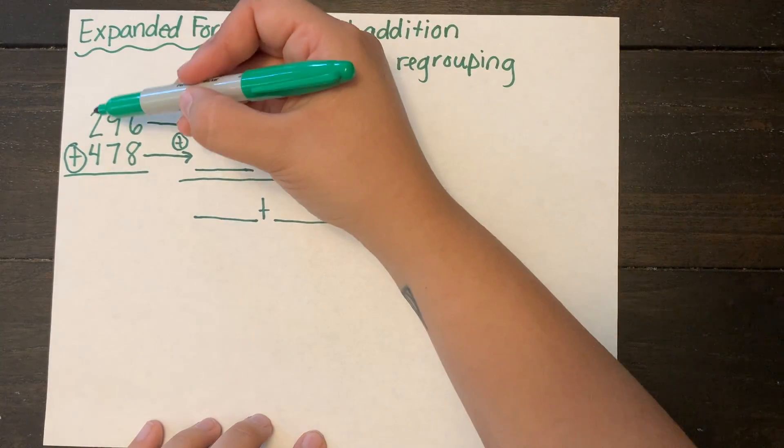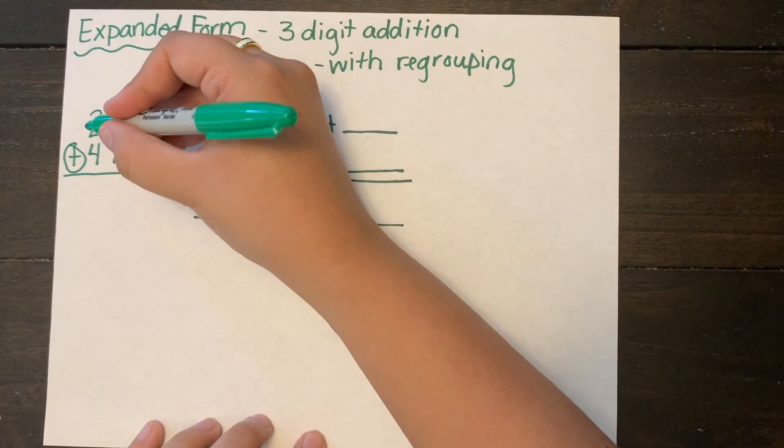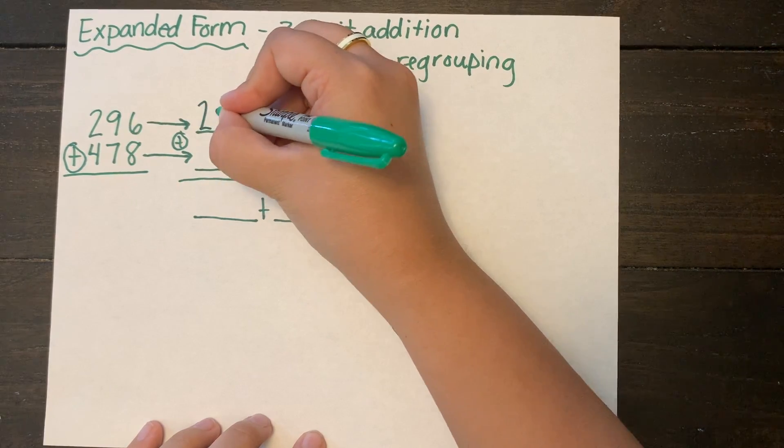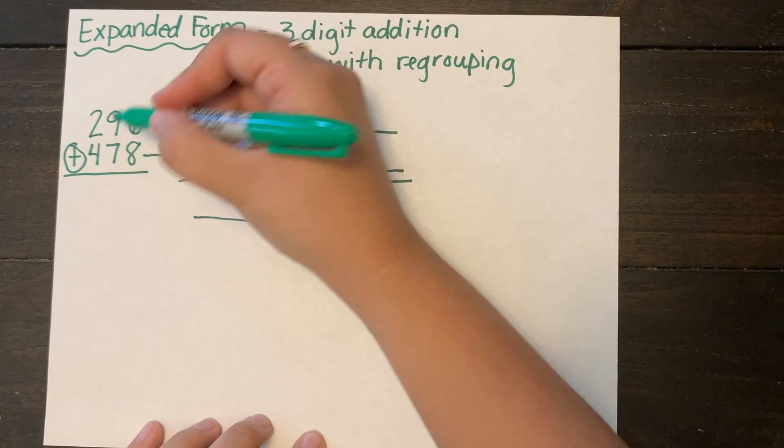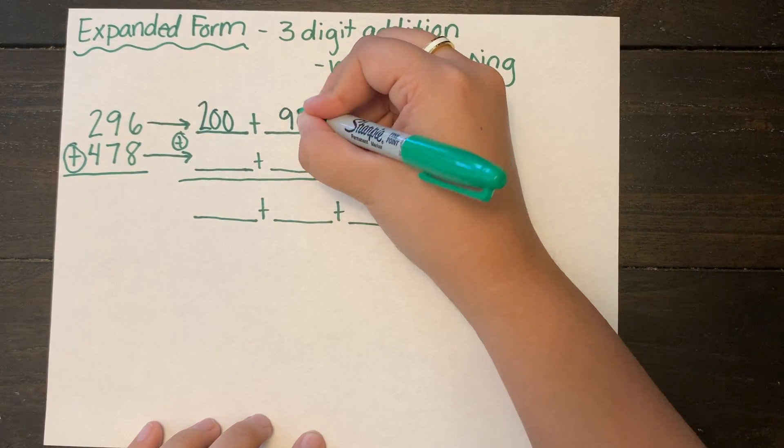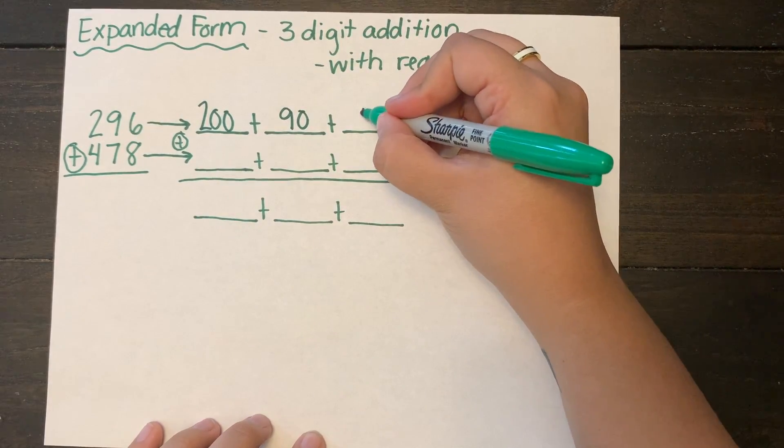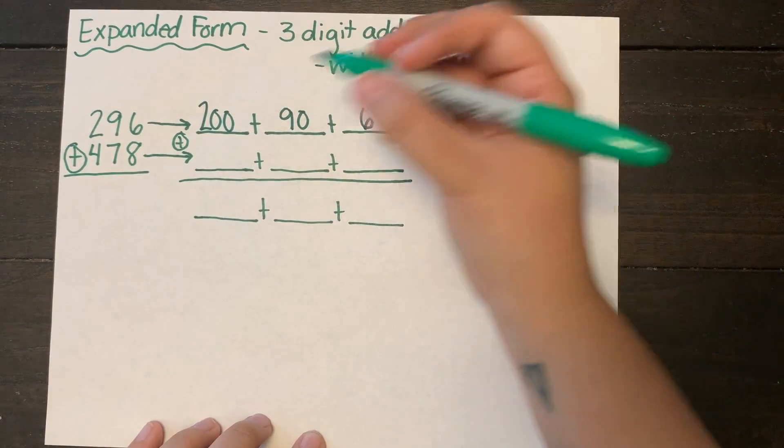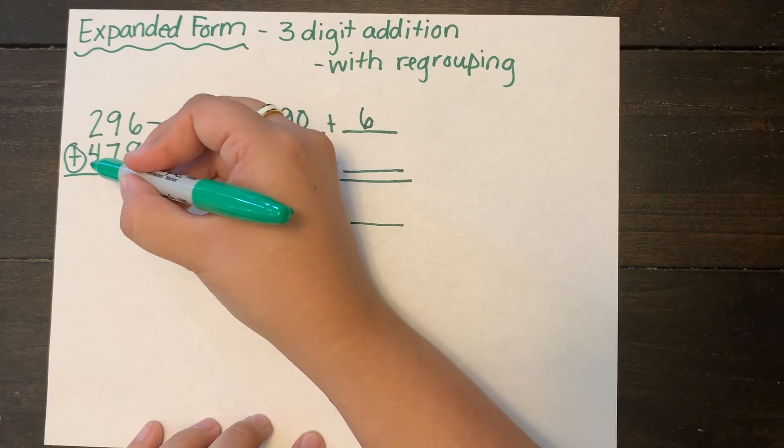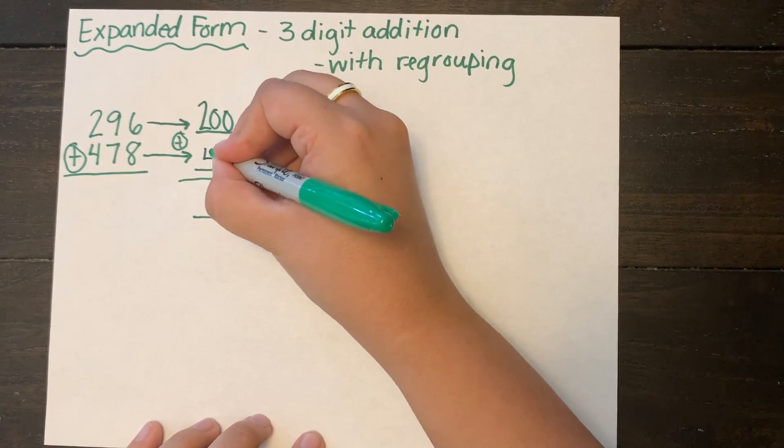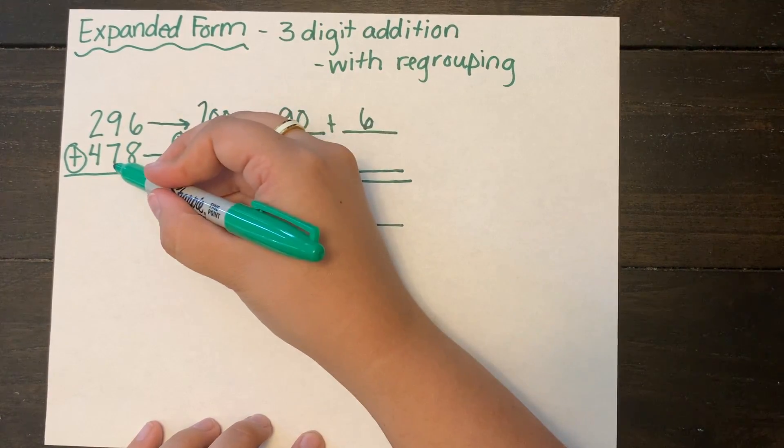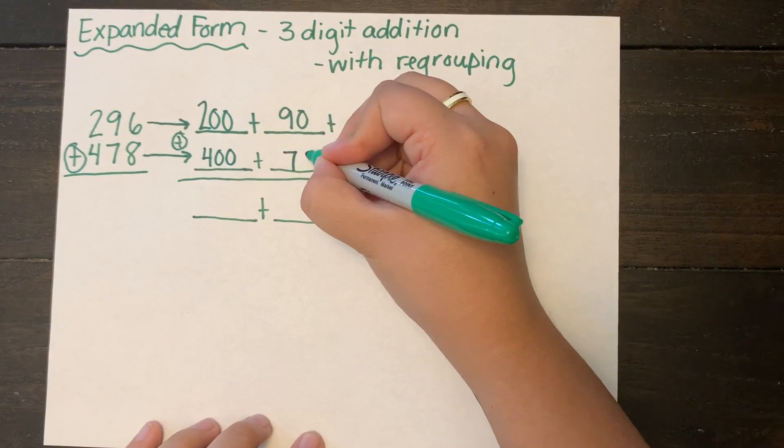So I'm going to first start with 296. I have two in the hundreds place so that is 200 plus 90 plus 6. Next I'm going to expand out 478. So that's 400, 70, and 8 ones.